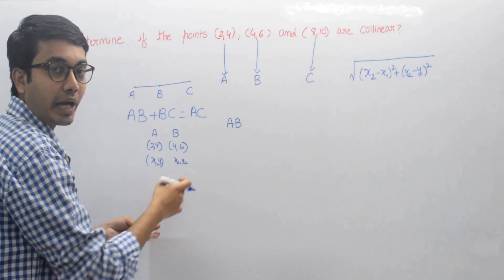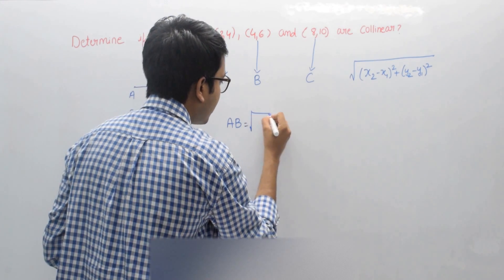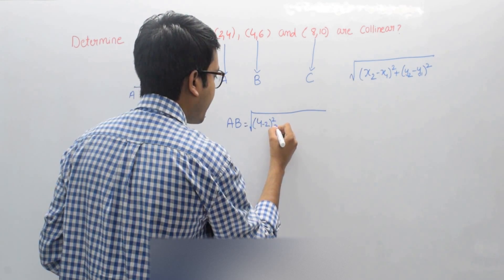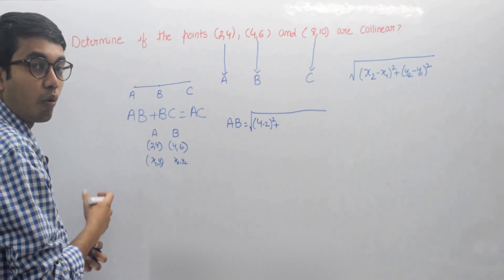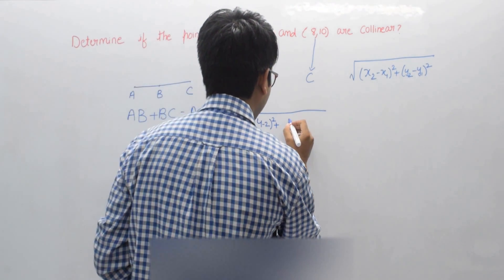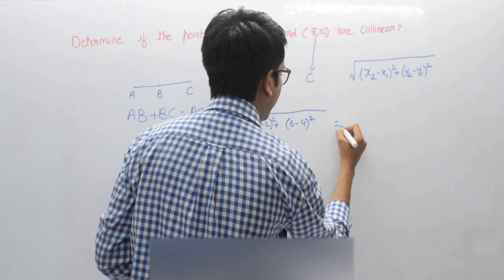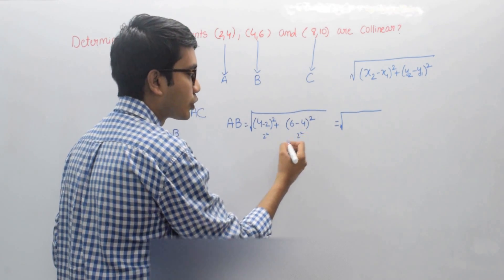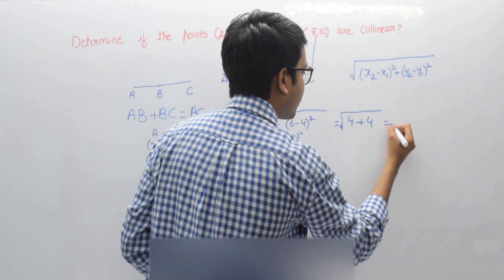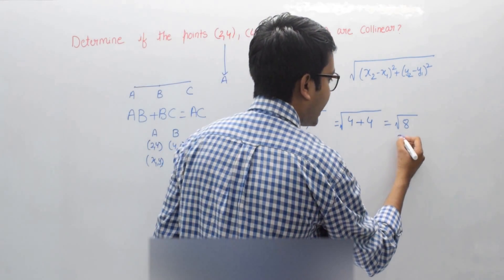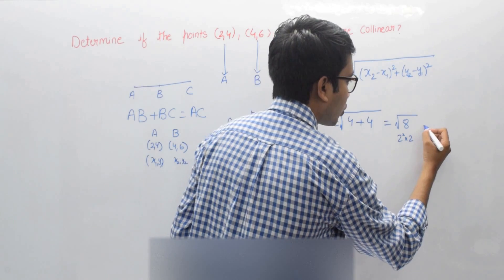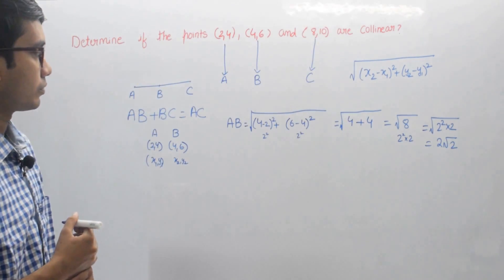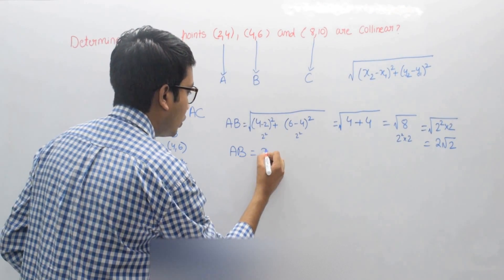We'll apply the formula to calculate the distance between A and B. This will be equal to square root of (4 minus 2) whole square plus (6 minus 4) whole square, which equals square root of 8. Now 8 can be written as 2 squared times 2, so this equals 2 root 2. So AB equals 2 root 2.